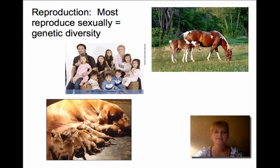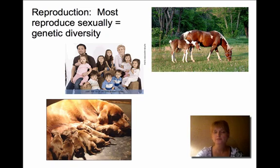Animals have to reproduce. Most reproduce sexually, which leads to genetic diversity, but there are some animals that reproduce asexually, and some that can do both.